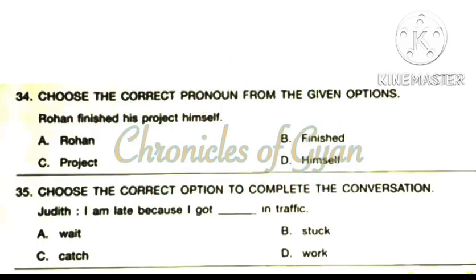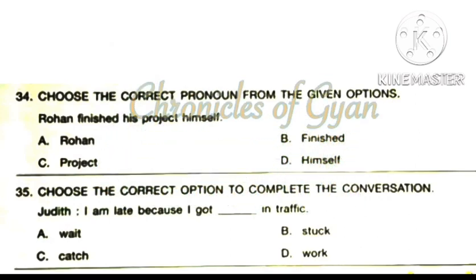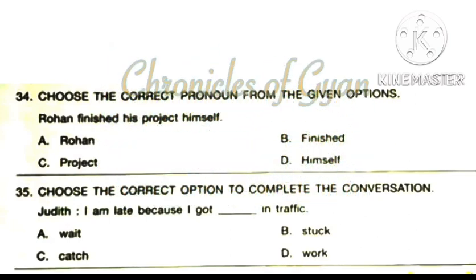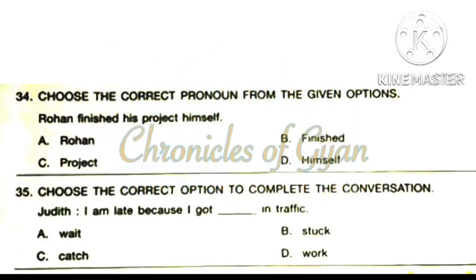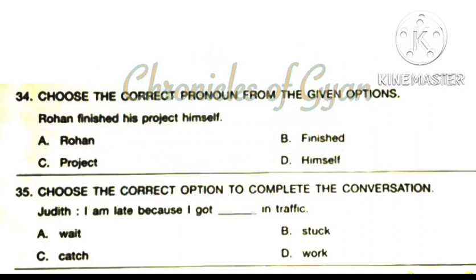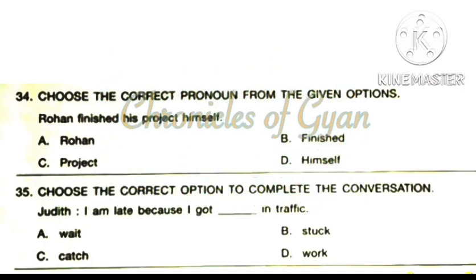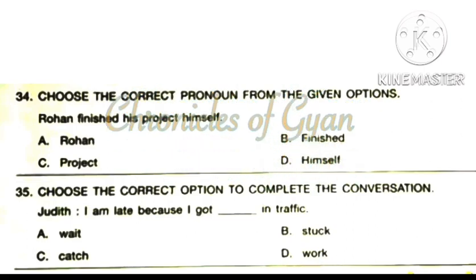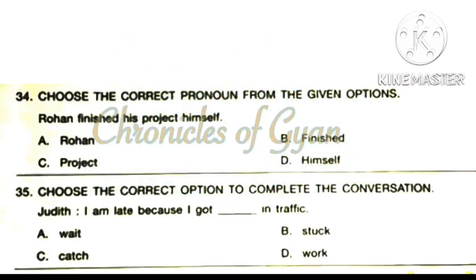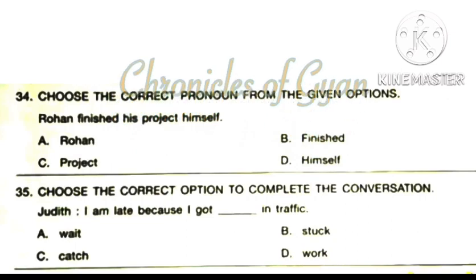Question 34: Choose the correct pronoun. Rohan finished his project himself. A pronoun is a word used instead of a noun, and here the noun is Rohan. So the pronoun used is 'himself'. The correct answer is option D: Himself.